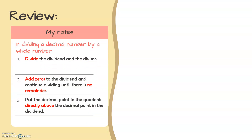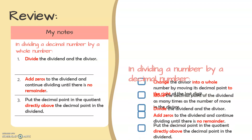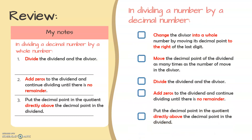In dividing a decimal number by a whole number, we divide the dividend and the divisor. Then, we add zeros to the dividend and continue dividing until there is no remainder. Lastly, we put the decimal point in the quotient directly above the decimal point in the dividend.